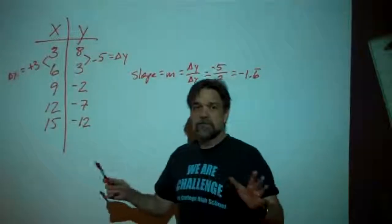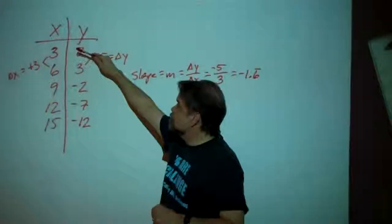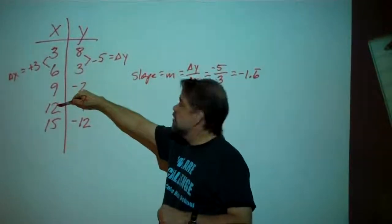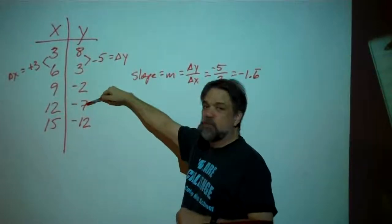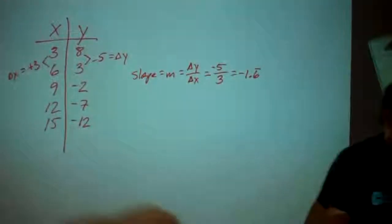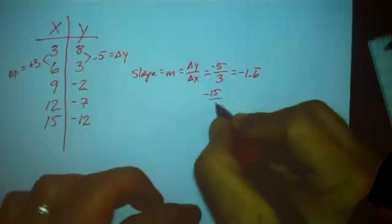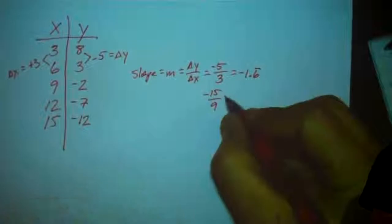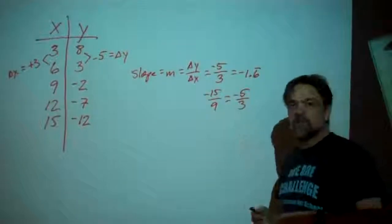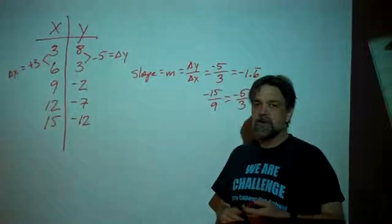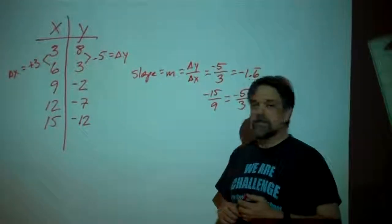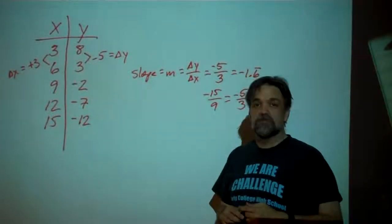And again, now notice, this is going to be true no matter what points you choose. You could choose 3, 8 and 12, negative 7, for example. From 3 to 12, x increased by 9. From 8 to negative 7, y decreased by 15. So the change in y is negative 15, the change in x is 9. And you would get negative 15 over 9, which of course simplifies to negative 5 over 3. You still get the exact same slope no matter which two points you choose. So slope is a very, very important feature of lines, and so it's really important that you get this down because we're going to use this quite a bit in the future.